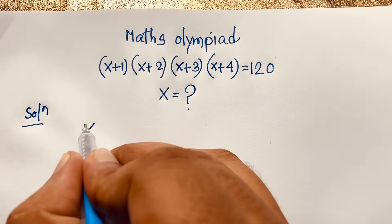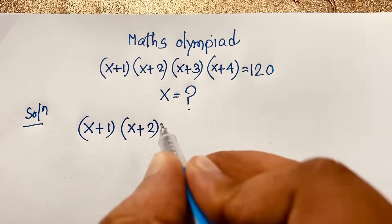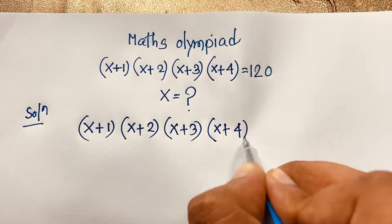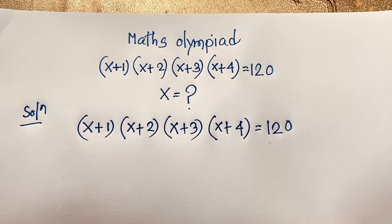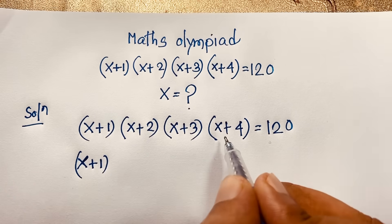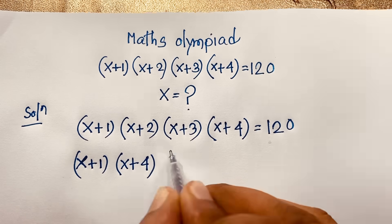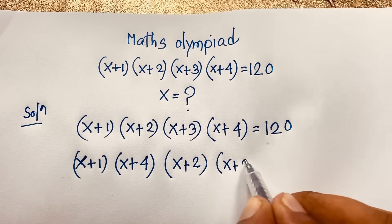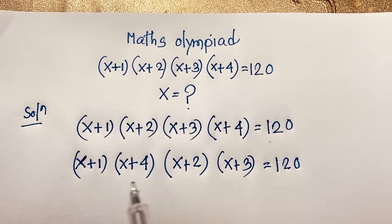Our question is (x+1)(x+2)(x+3)(x+4) = 120. I will solve this step by step. I rearrange and pair the terms as (x+1)(x+4) times (x+2)(x+3) = 120. Notice that 1+4 = 5 and 2+3 = 5.